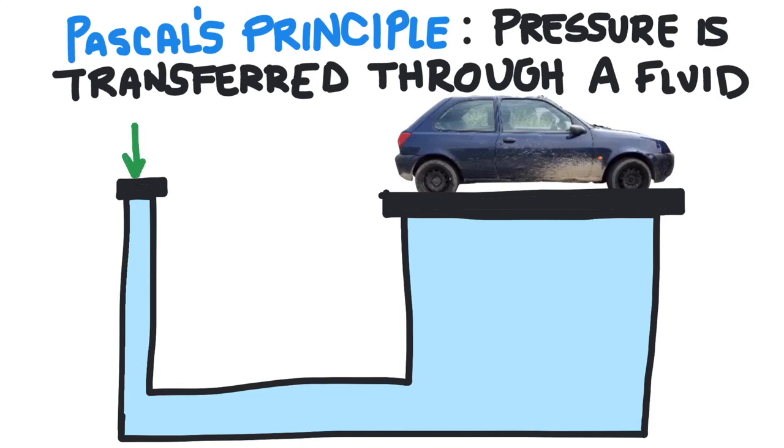A pressure is applied to a small area at one end, and the fluid that's in the system transfers that pressure to a larger area. It's the same amount of pressure that was put into the fluid, but now it's exerted over a larger area, and so you could lift very heavy objects like a whole car.